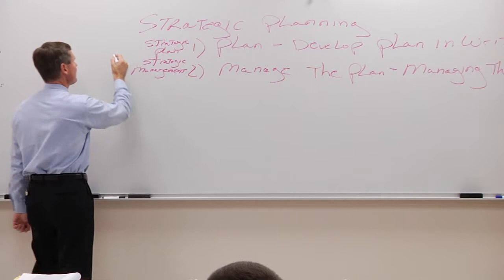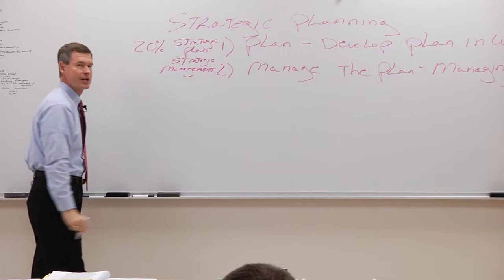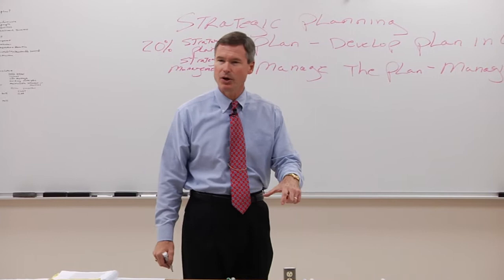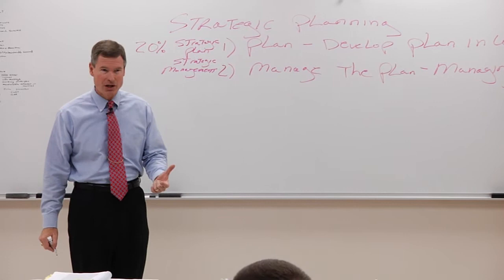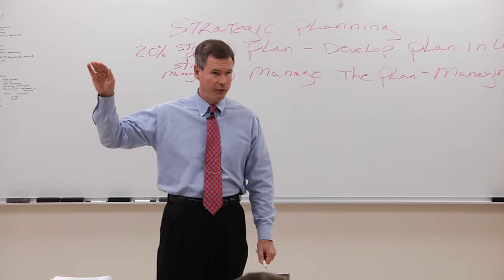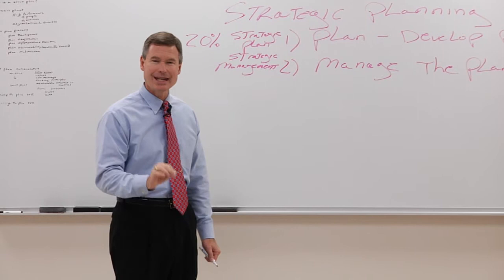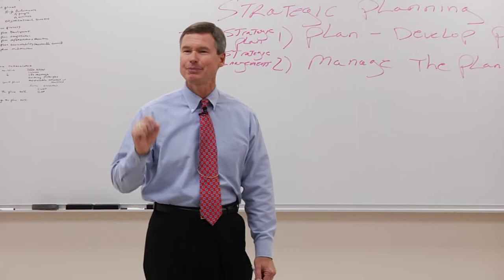I like to apply the Pareto principle here: developing the plan correctly is about 20% of the process. When people in an organization have input, they're on the road to becoming stakeholders and having that shared vision. If you put your strategic plan together just at the corporate office or headquarters, you're going to have a hard road getting critical mass on board. You need to get buy-in at the grassroots level, and you do that by starting right with the strategic planning process.